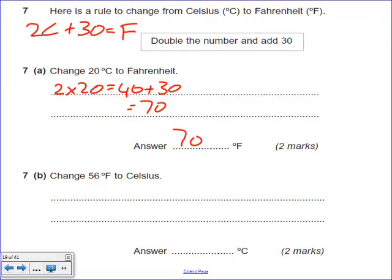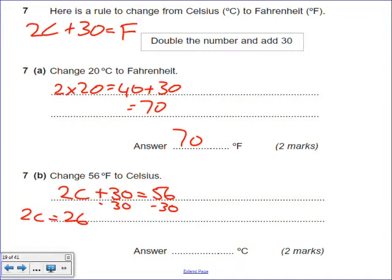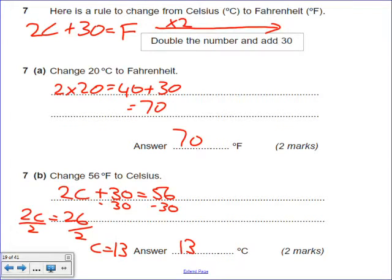A lot of you dropped two marks because you didn't do the second bit. If you'd used the formula, the second part is quick: swap the 56 for F, giving 2C plus 30 equals 56. Take away 30 from both sides: 2C equals 26. Divide both sides by 2: C equals 13. It's the function machine — what's the first thing I do, what's the second — and coming back the other way.